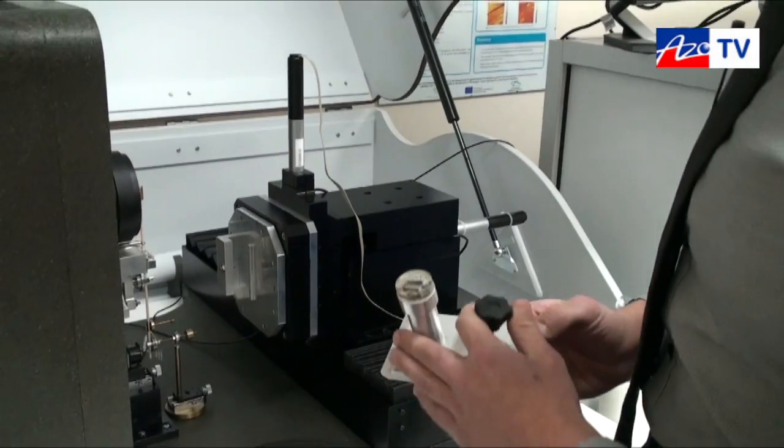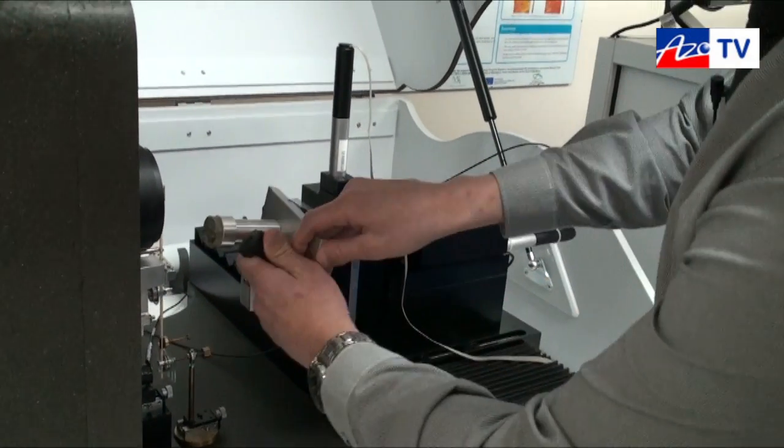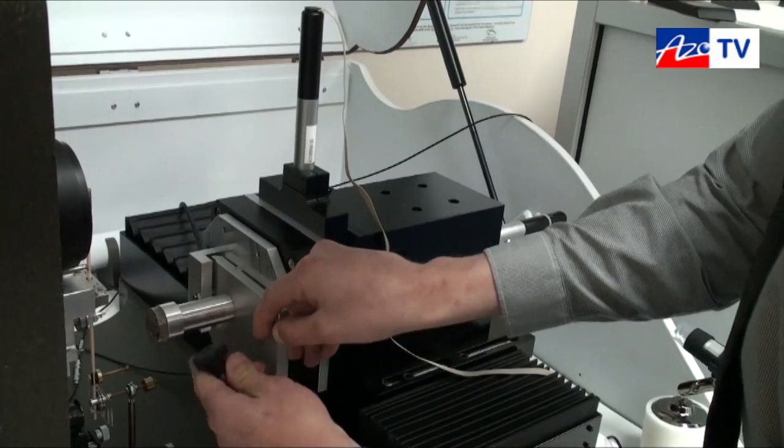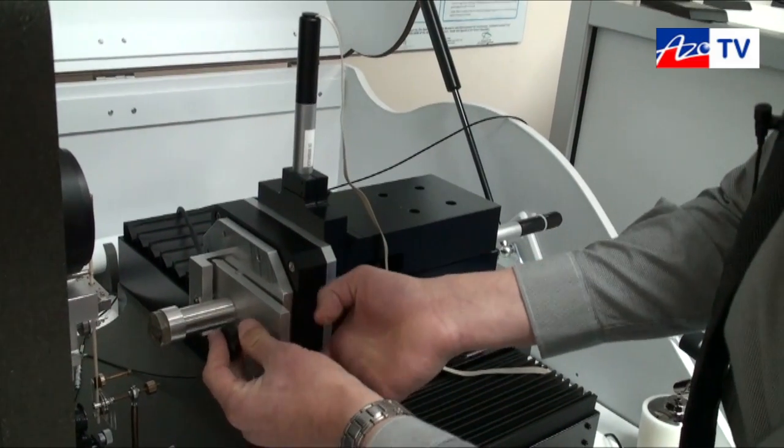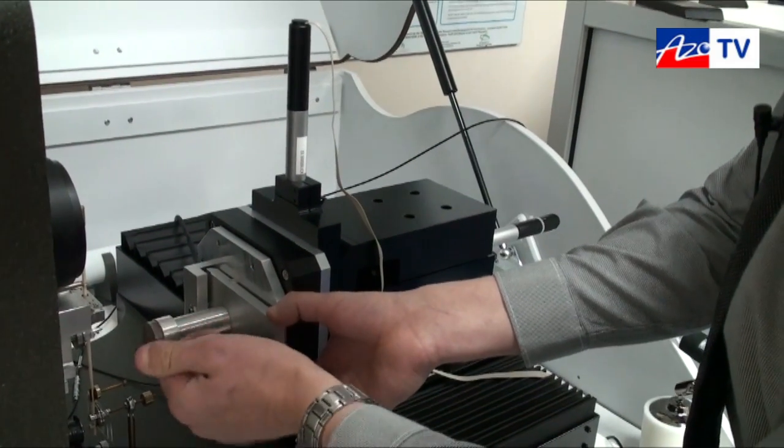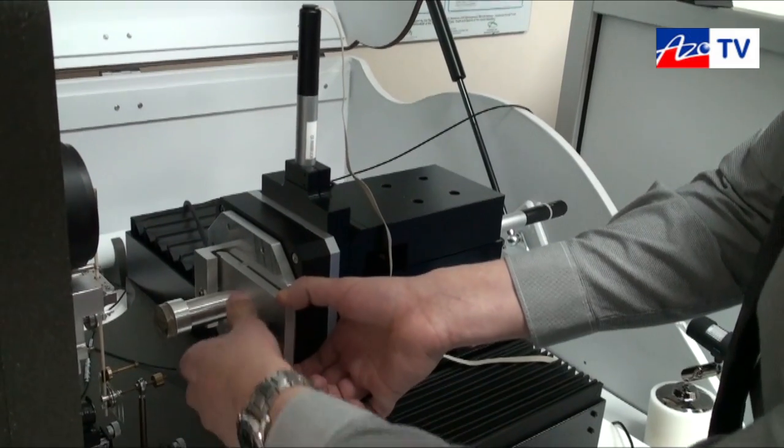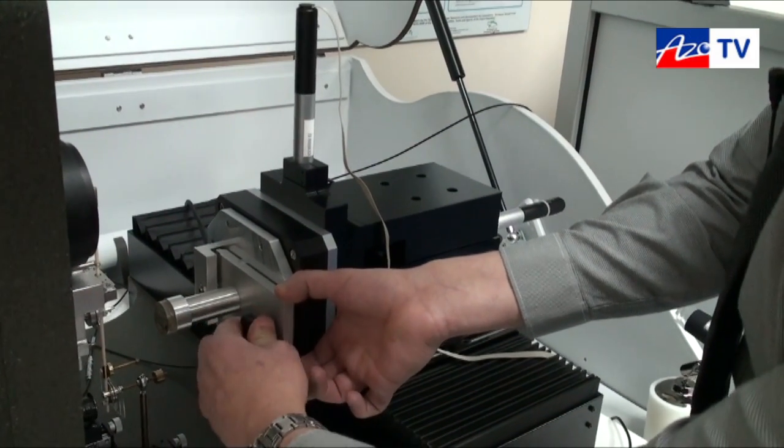Now I'm going to mount the sample up. All we do to mount the sample is just slot this in here. The sample slides down and then line that up in the hole and tighten it up. Just make sure it's good and tight. Now that's securely in position.